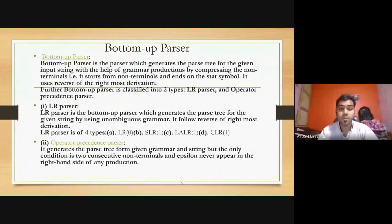Now coming to bottom-up parser: a bottom-up parser generates the parse tree for the given input string with the help of grammar productions by compressing the non-terminals — that is, it starts from non-terminals and ends on the start symbol. It uses the reverse of rightmost derivation.